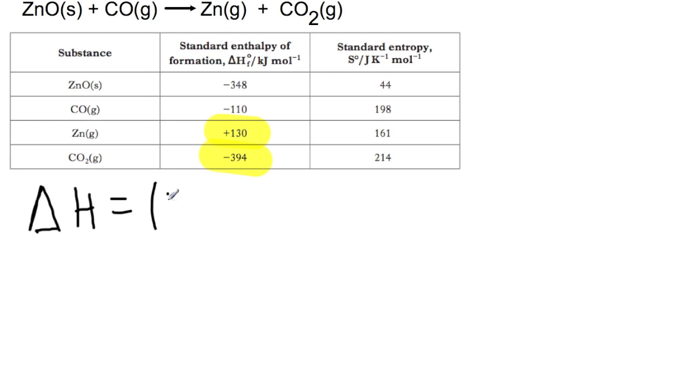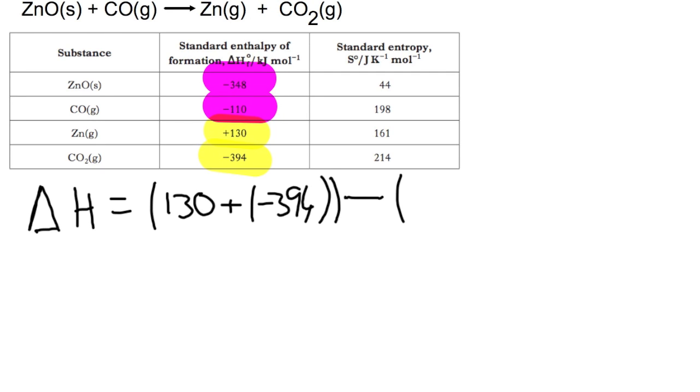So we have 130 plus negative 394. We're going to minus the enthalpy changes of our reactants shown in pink. So we have minus 348 plus negative 110.